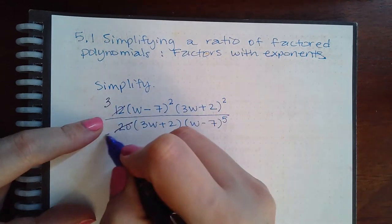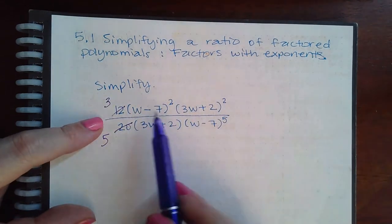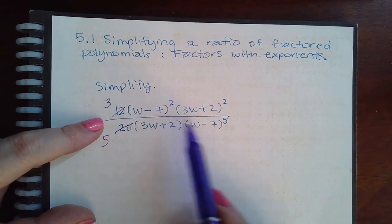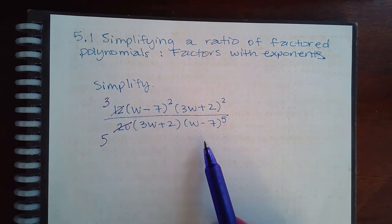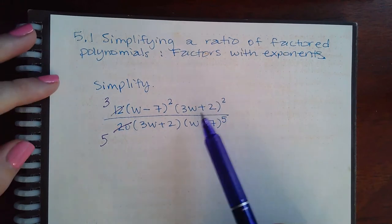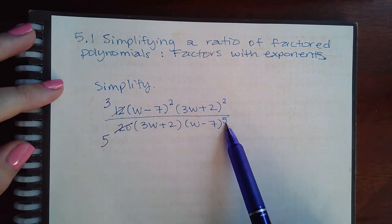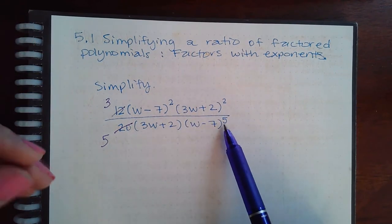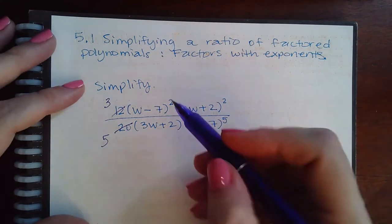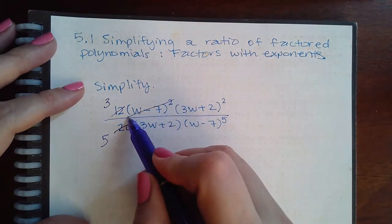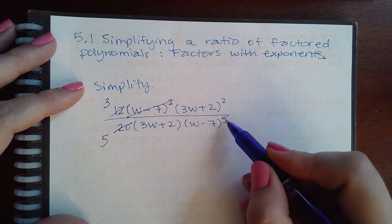Giving me a three and a five. I have a w minus seven factor here and a w minus seven factor here, and so then I have a square here and a fifth power. And you can only simplify by the lowest exponent. So if I take the square out, those would all be gone, and if I square out of here I'm still going to be left with the power of three.